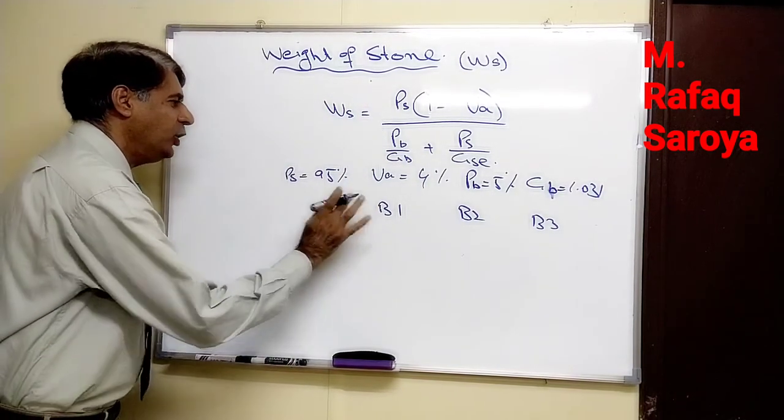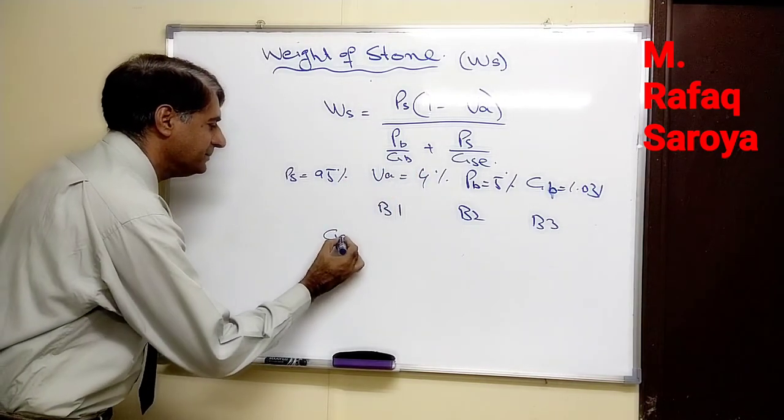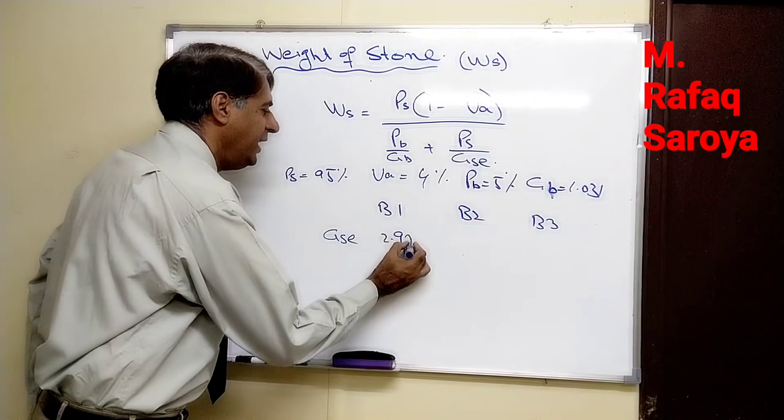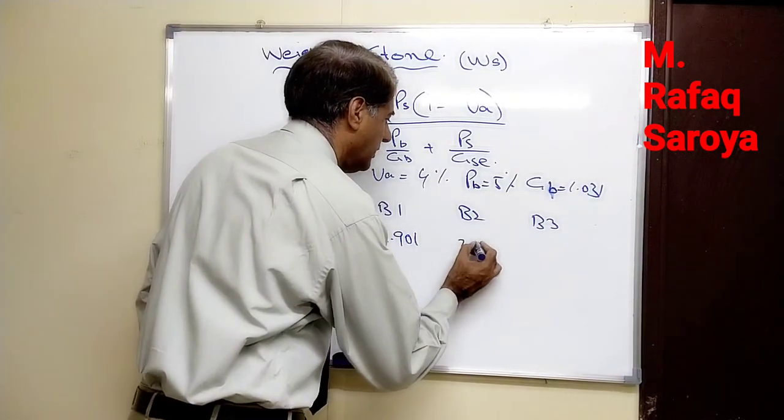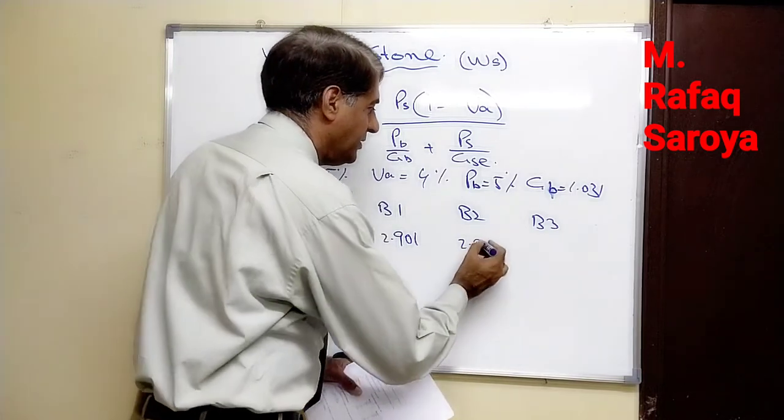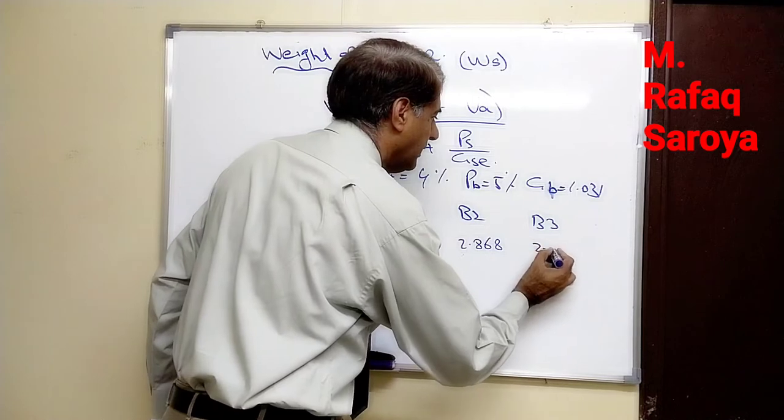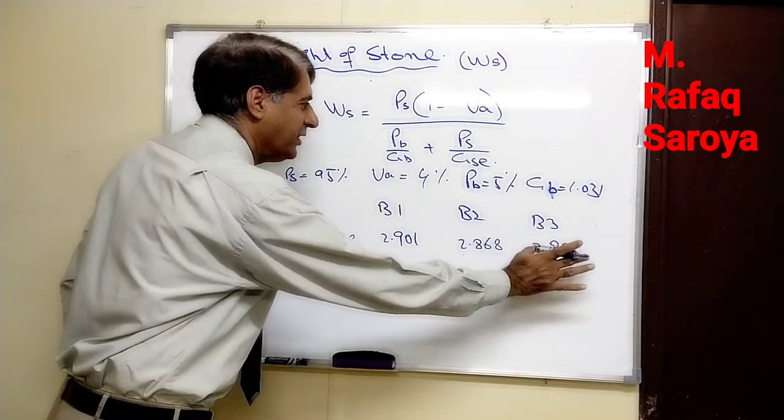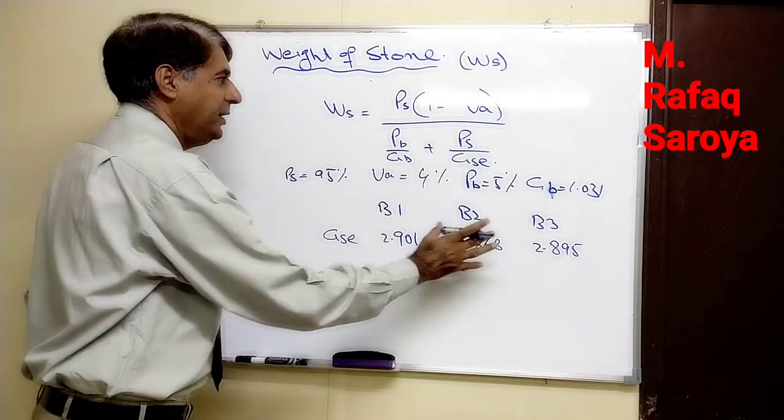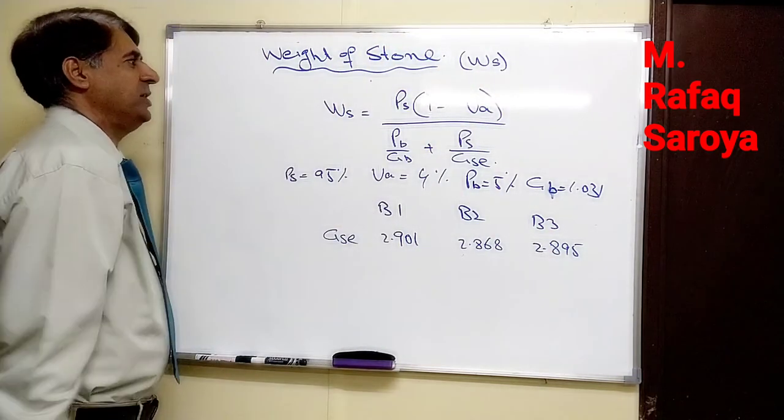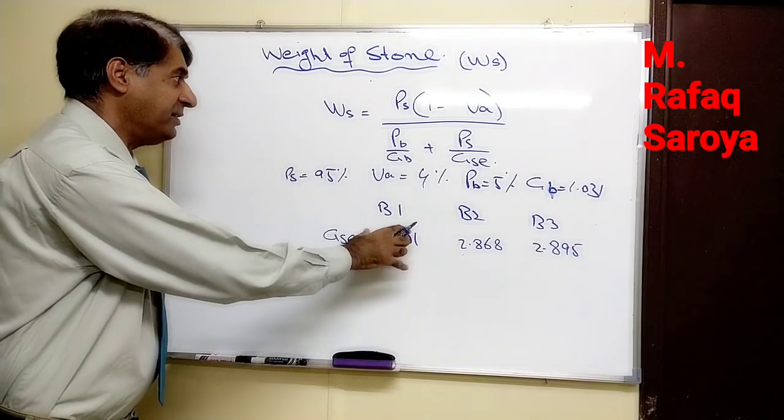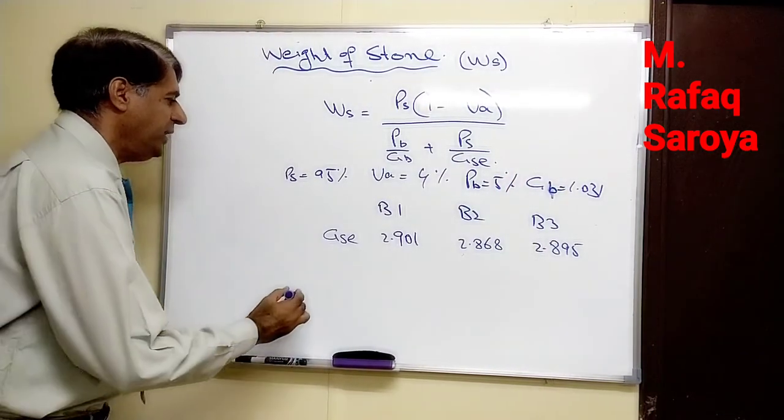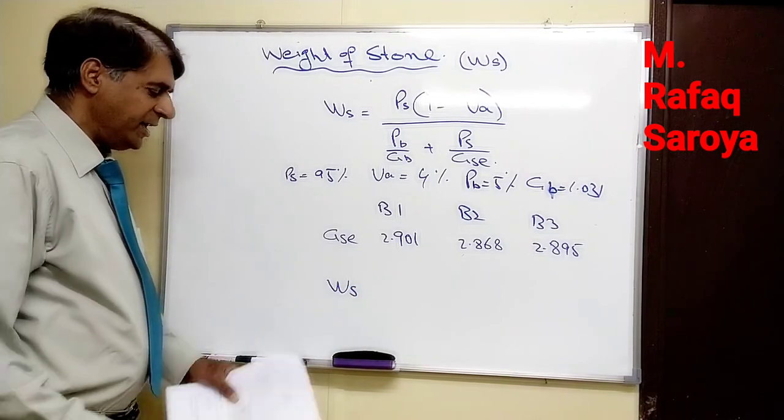The only unknown parameter which is not a constant is this Gse: 2.901, 2.868, 2.895. For each blend I have written a value, and these constant values are also written here. When all these values are put in this equation for each blend, then we are going to get Ws, the weight of stone.